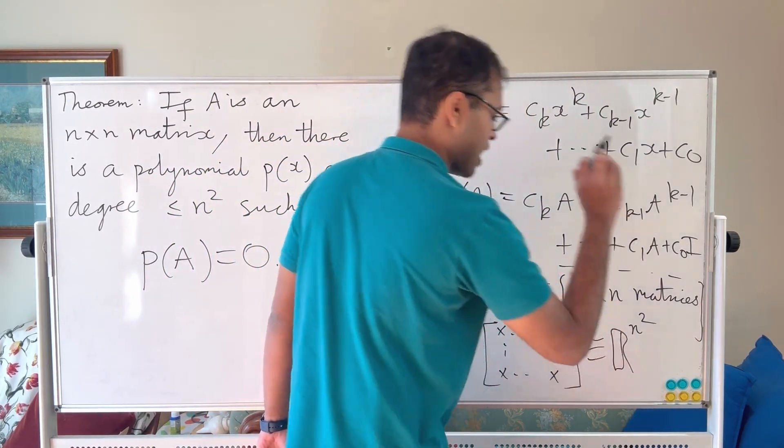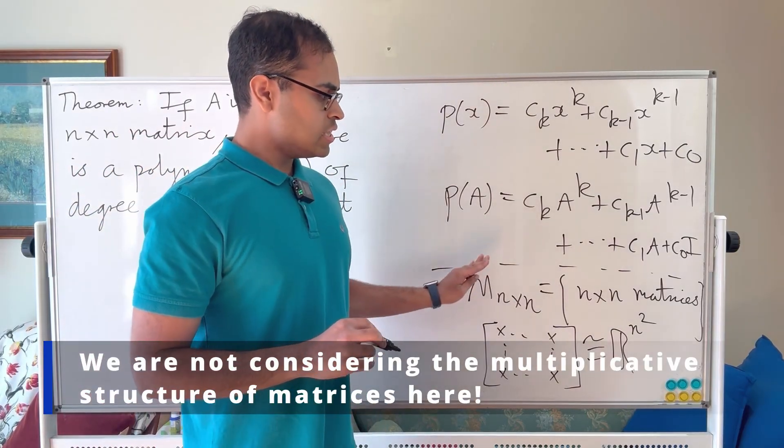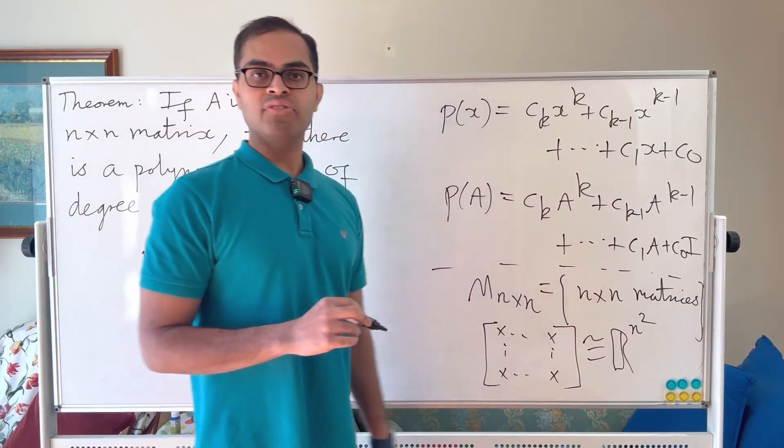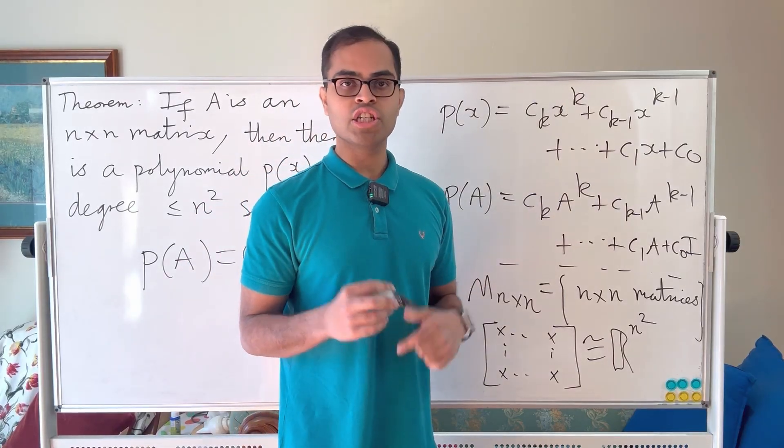So effectively, and this is what we call an isomorphism in math, we say these are isomorphic. And the interesting thing about thinking about the n by n matrices in this way is now this expression becomes a linear combination of vectors.